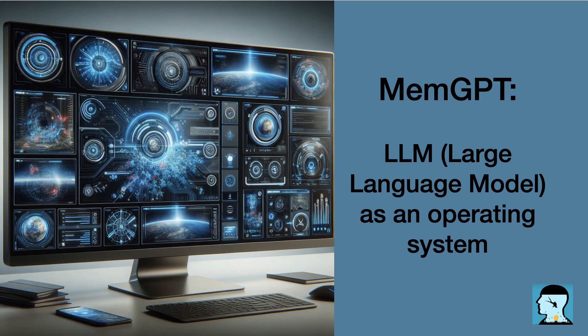These features enable MEMGPT to effectively handle document analysis tasks. It can search through and analyze a large document database stored in the external context, perform self-directed editing and retrieval, update its memory, and move items between contexts as needed. This flexibility and adaptability make MEMGPT a powerful tool for document analysis, providing improved efficiency and accuracy compared to existing approaches. Can you elaborate on how MEMGPT's virtual context management and interrupt-based control flow contribute to the performance of multi-session chat applications? How does it enable MEMGPT to remember, reflect, and evolve dynamically through long-term interactions with users?